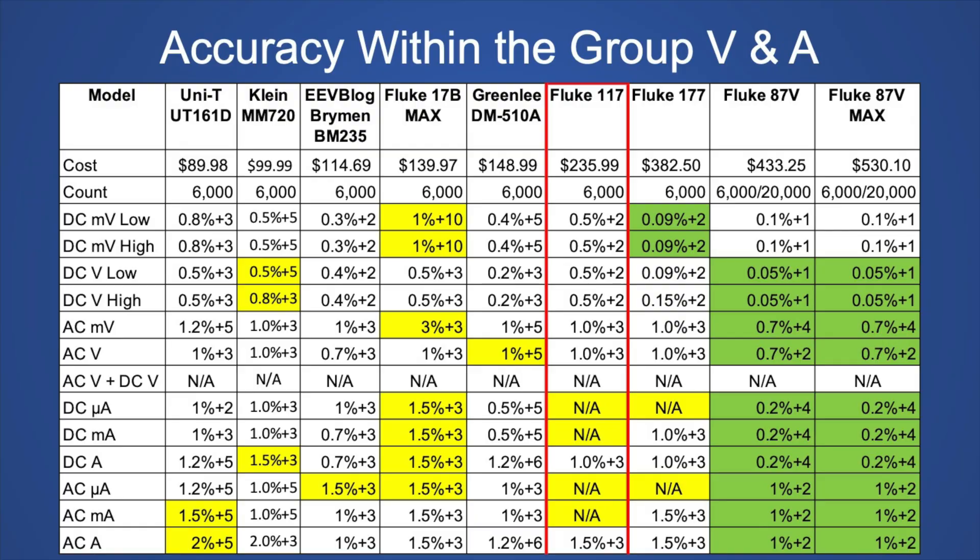This is a chart of the accuracy specifications for voltage and current for this group of 6,000 count meters. As you can see, the Fluke 117 does not have microamp or milliamp ranges. And the other ranges have mediocre accuracy. It's better than some, but not better than others. So it's sort of a higher price to pay for a meter, but you're paying for the Fluke name. But you might want to look into the Greenlee, if you're willing to spend that much. Or you might want to look into the EEV blog meter.